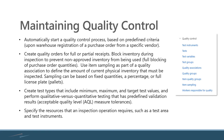The system will create the quality orders for full or partial receipts — again, configurable. You can block inventory during the inspection to prevent any non-approved inventory from being used. That's called full blocking, and it's configurable — it's a checkbox.